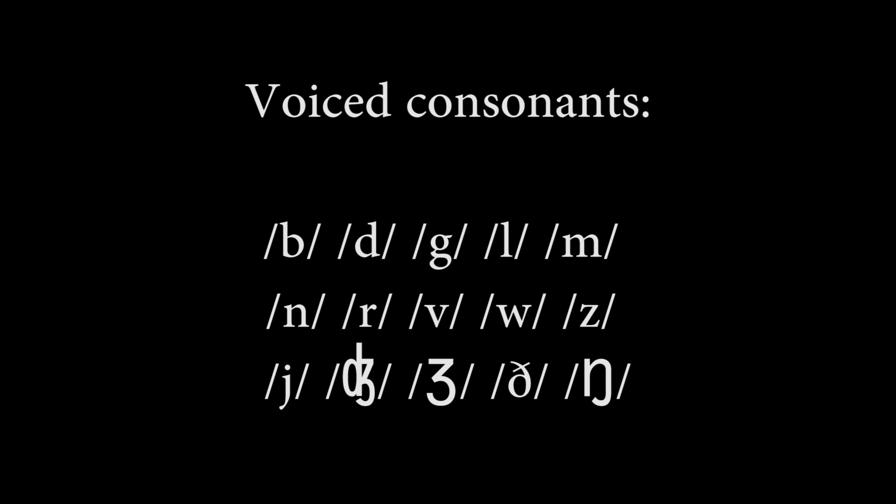The next voiced consonant is L — you can find it at the end of 'call' and at the beginning of 'lose.' Then M, like in 'mother,' 'mine,' or 'climb.' Next is N, like in 'nose' or 'nature,' or at the end of words like 'scene.' Then R, which you can find at the beginning of words like 'rice,' 'red,' and 'right.'